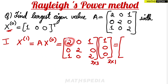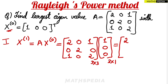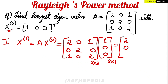Performing the multiplication: first row gives 2×1 + 0×0 + 1×0 = 2. Second row gives 0×1 + 2×0 + 0×0 = 0. Third row gives 1×1 + 0×0 + 2×0 = 1. So x^1 before normalization is the column vector [2, 0, 1].